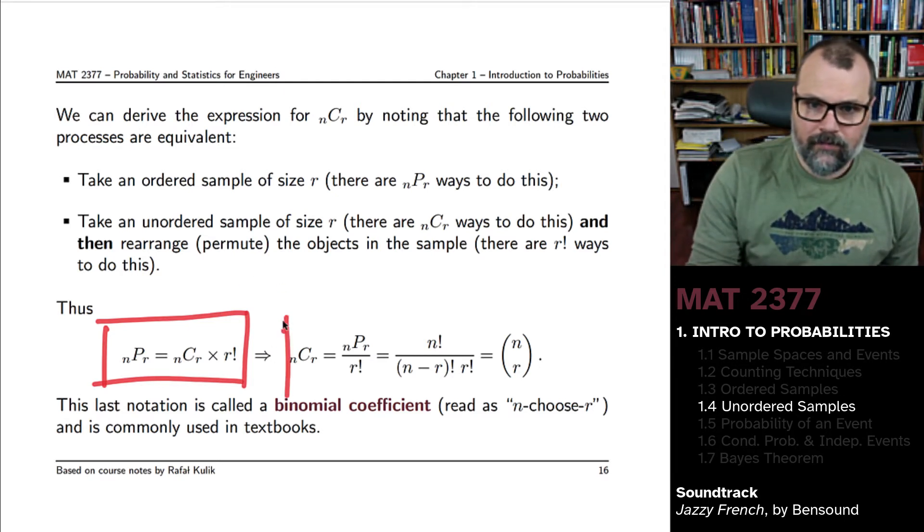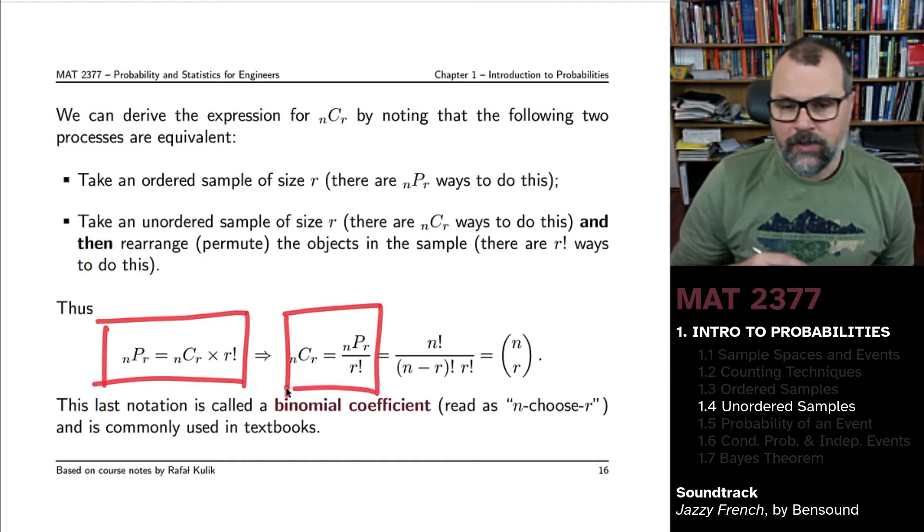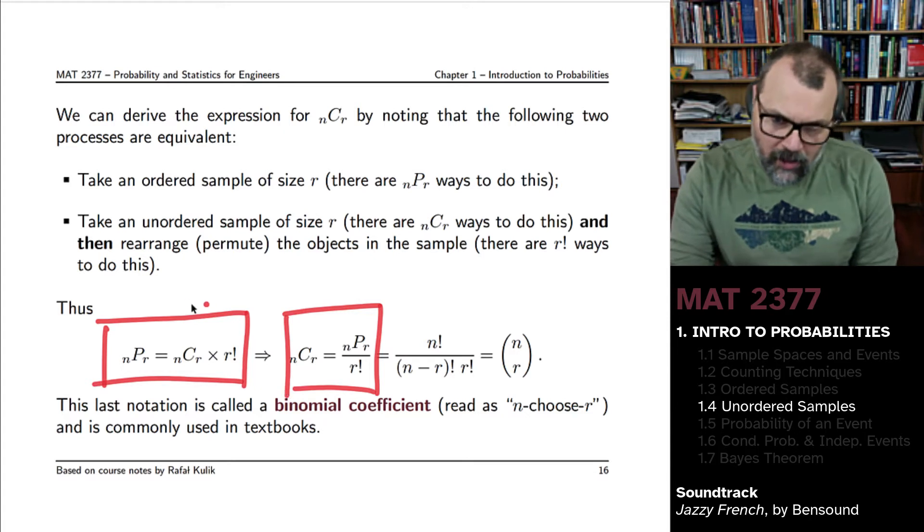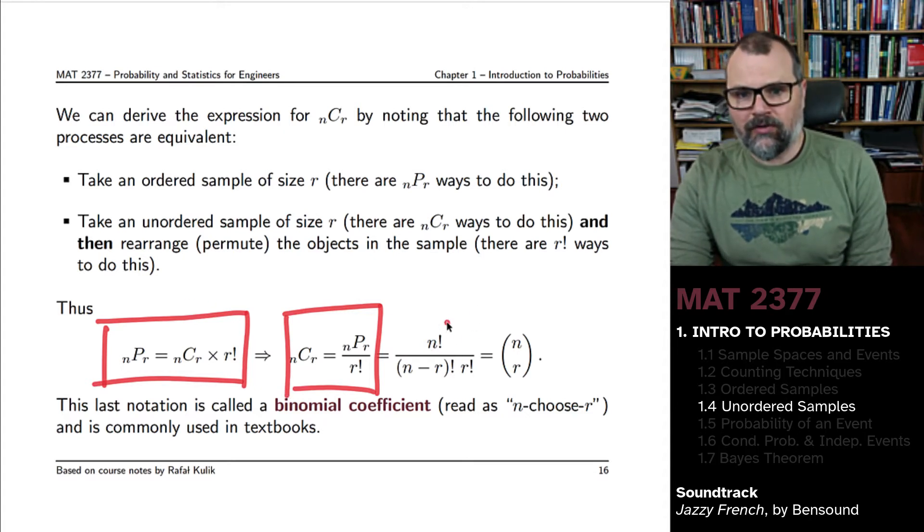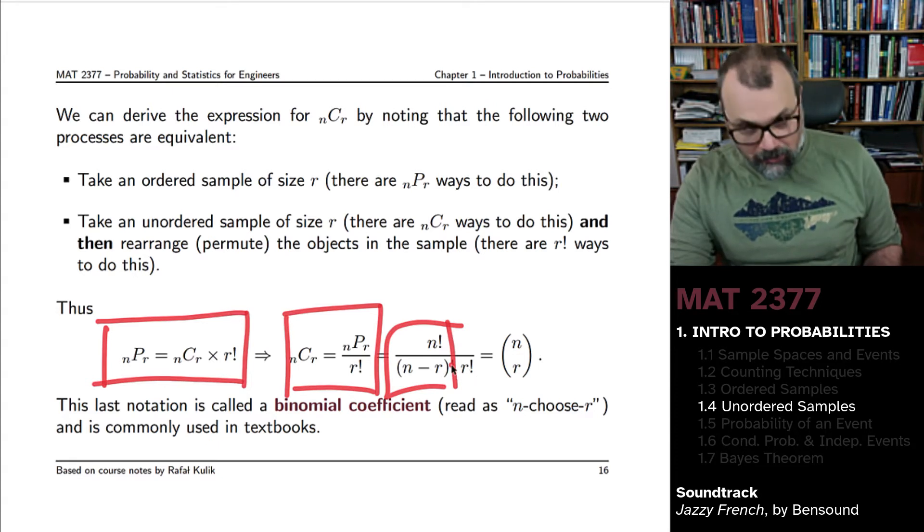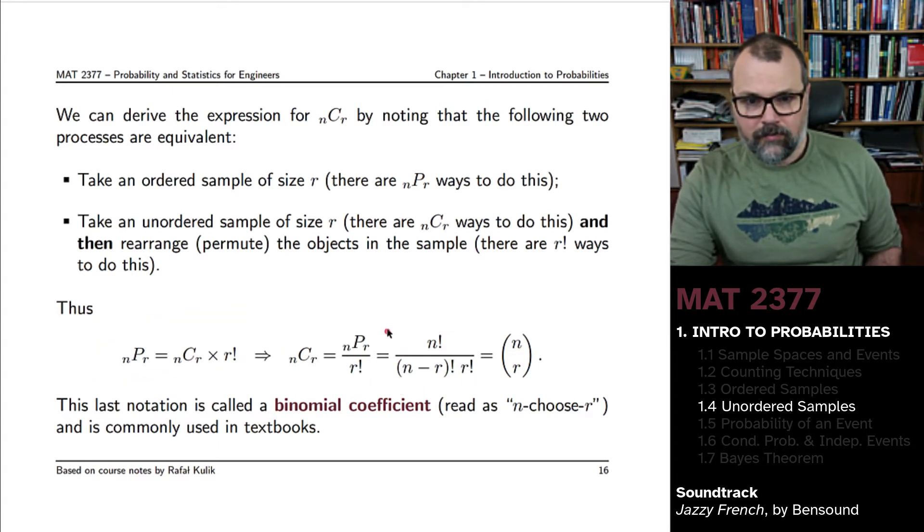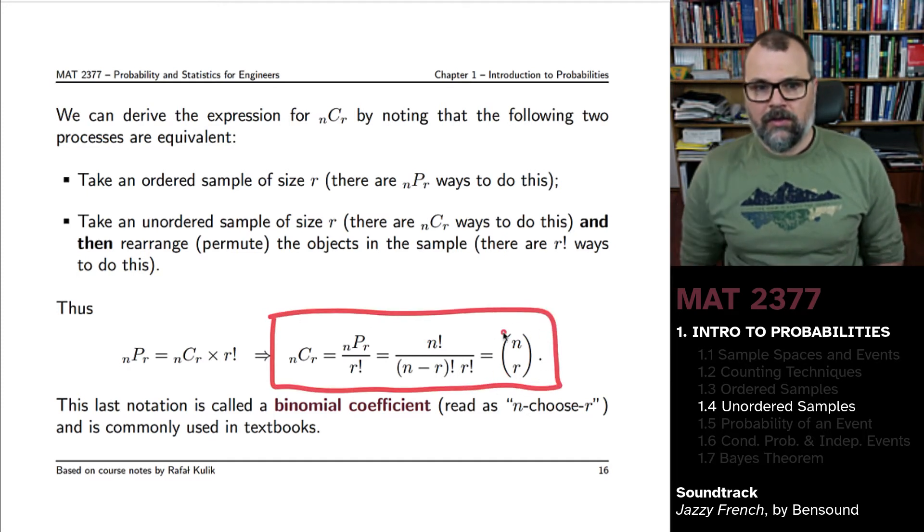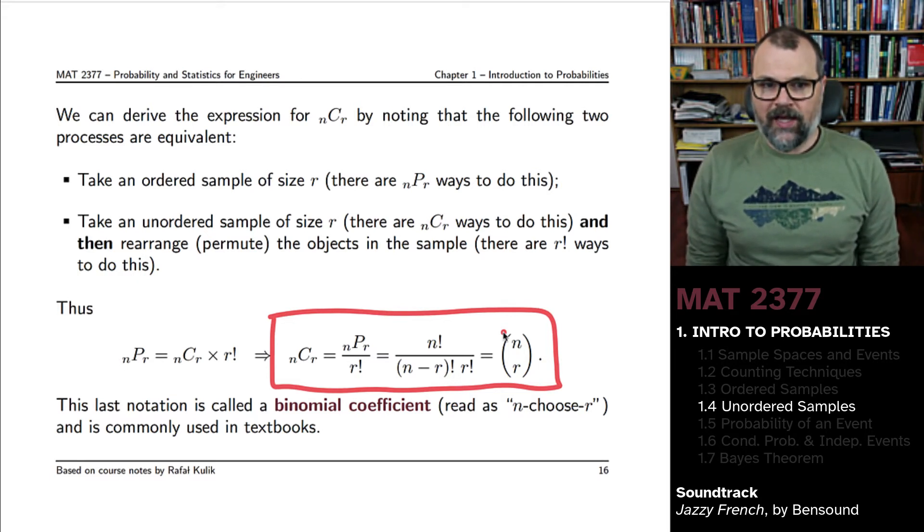You will get that it is going to be nPr divided by r factorial. We know what nPr is. It is n factorial divided by n minus r factorial divided by r factorial. And this new expression here, we often write it using a binomial coefficient.